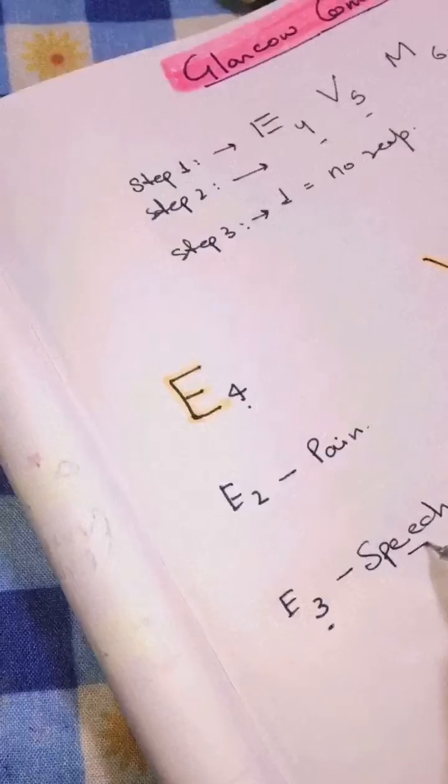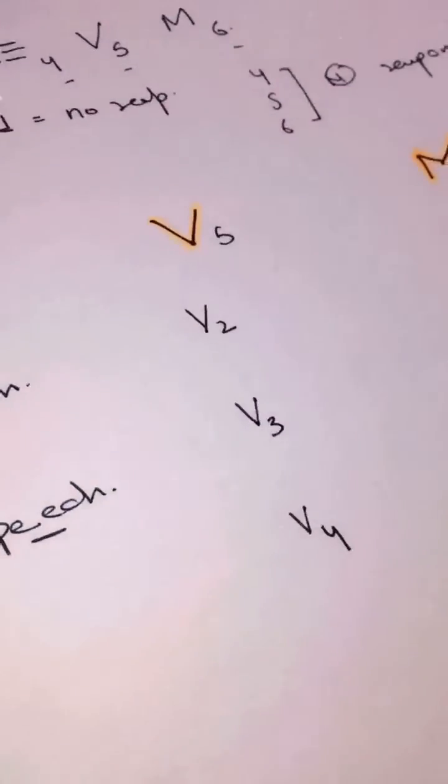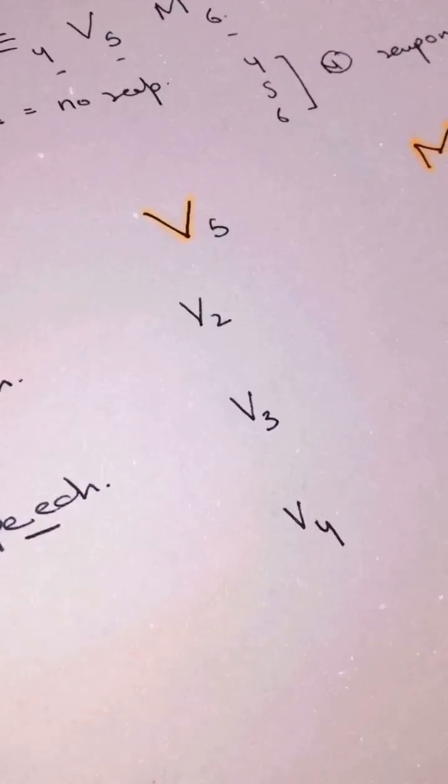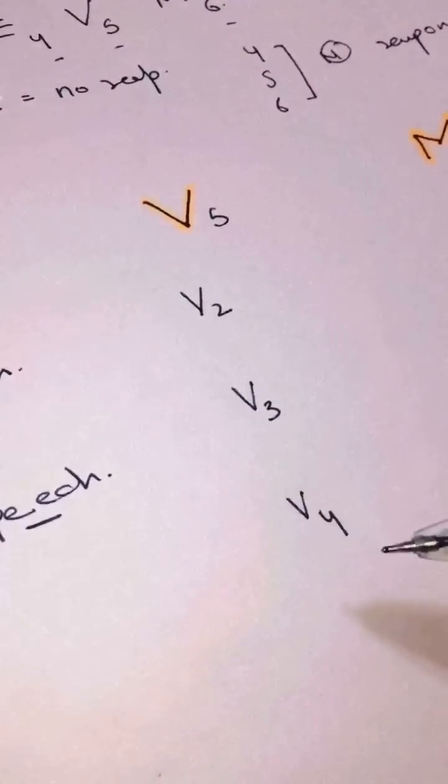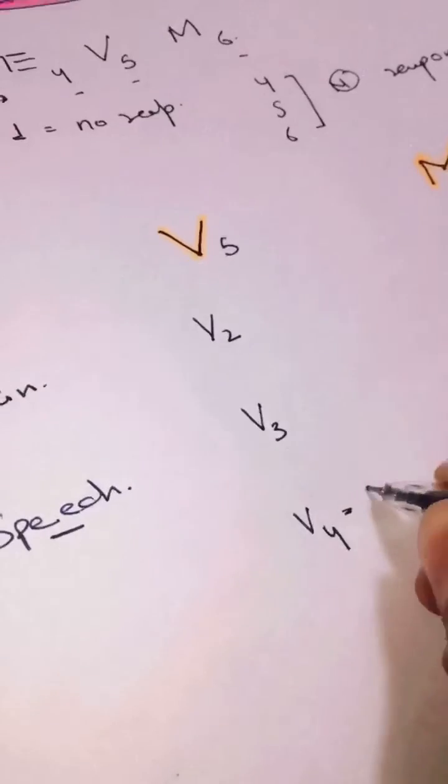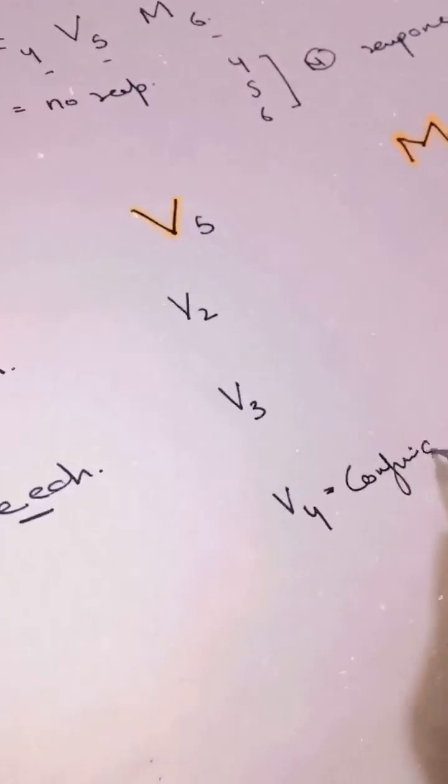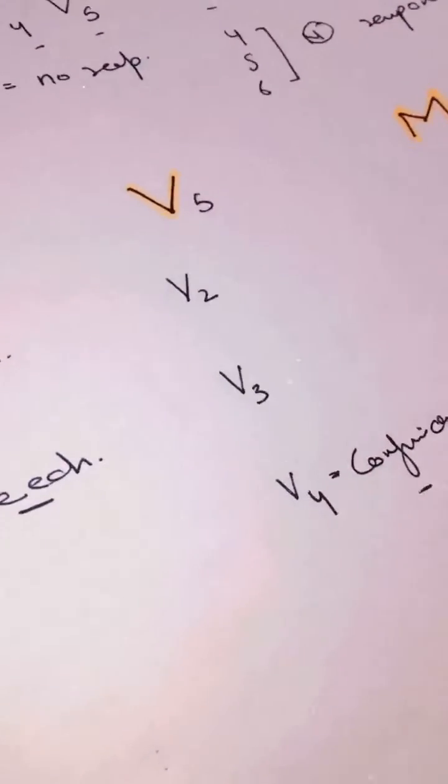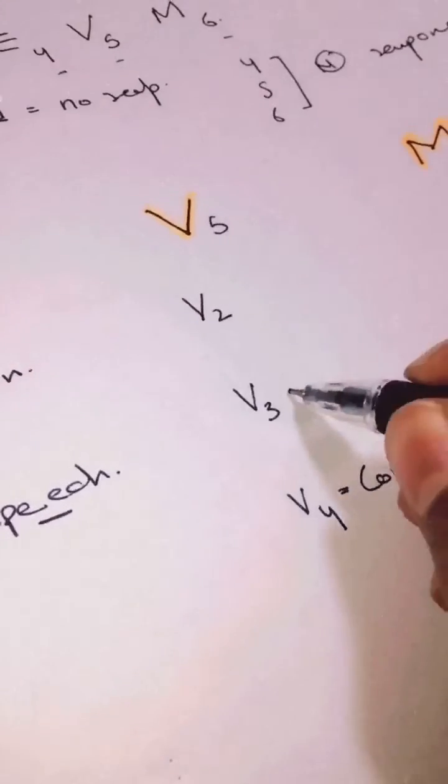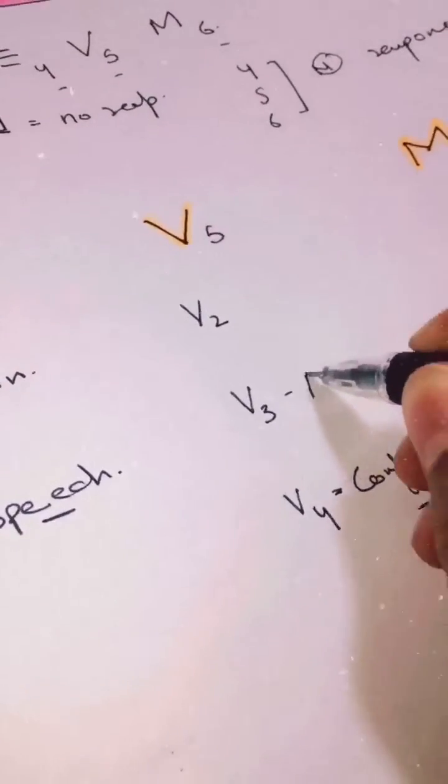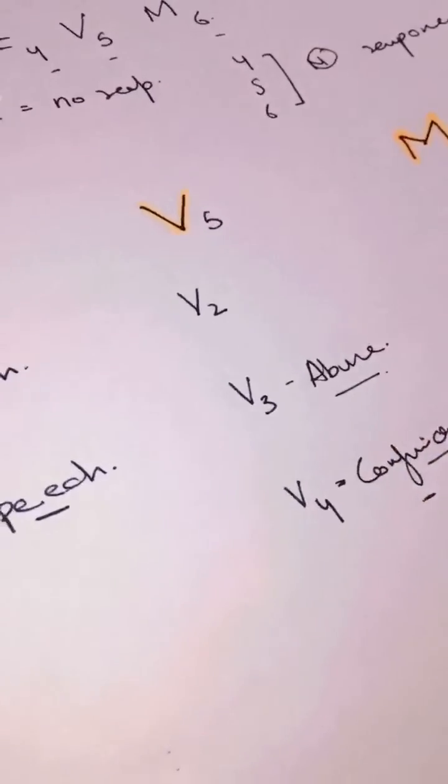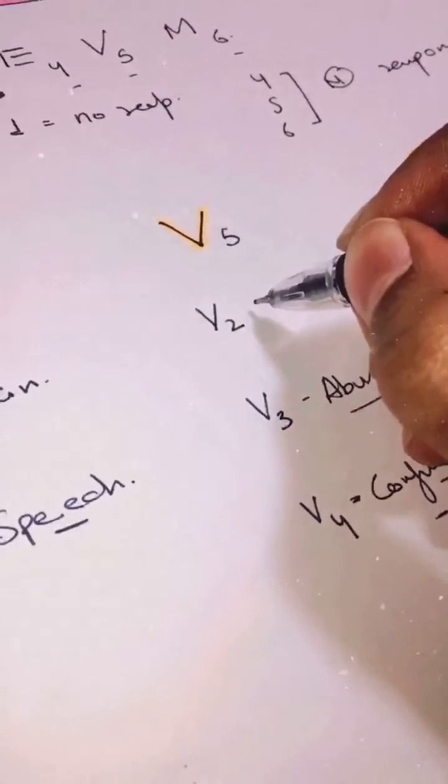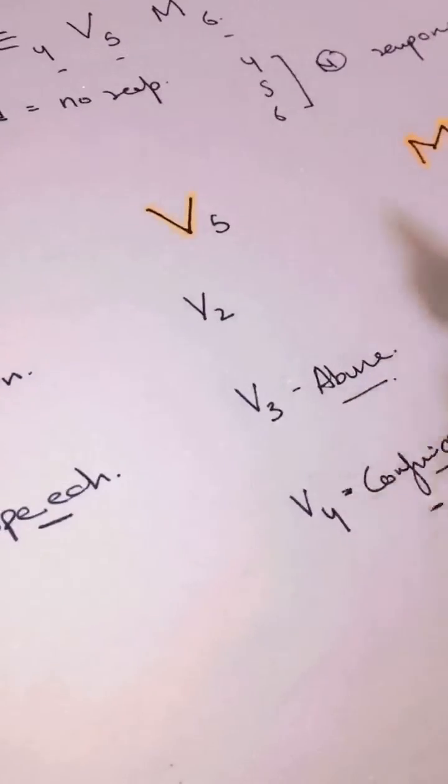Now V5, V1 we already know - no response. V5 is normal response. So what is left is V2, V3, V4. Let's go from downwards. V4, remember confusion. V3 will be abuse - confuse, abuse, correct. V2 will be inappropriate sounds like hmm, sounds will be there.